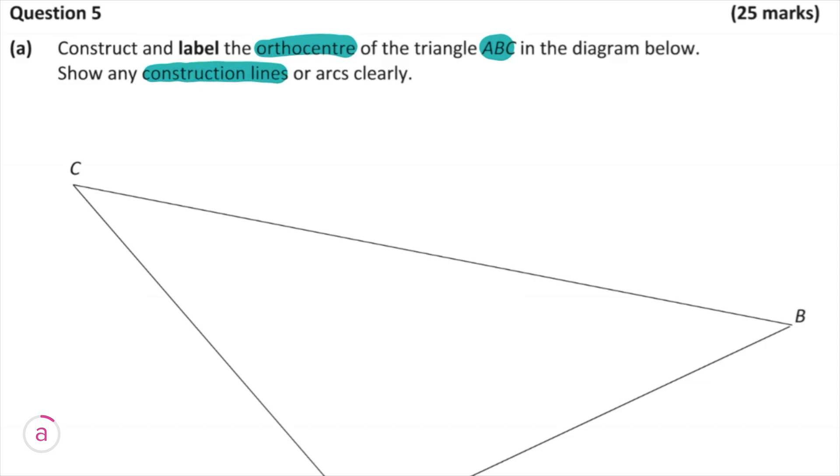We're first of all just going to define an orthocenter in case you didn't know. So an orthocenter is where three altitudes intersect, and an altitude is a perpendicular line from a vertex to its opposite side. So all we need to do to find the orthocenter is actually just to do two altitudes because doing a third one just isn't necessary.